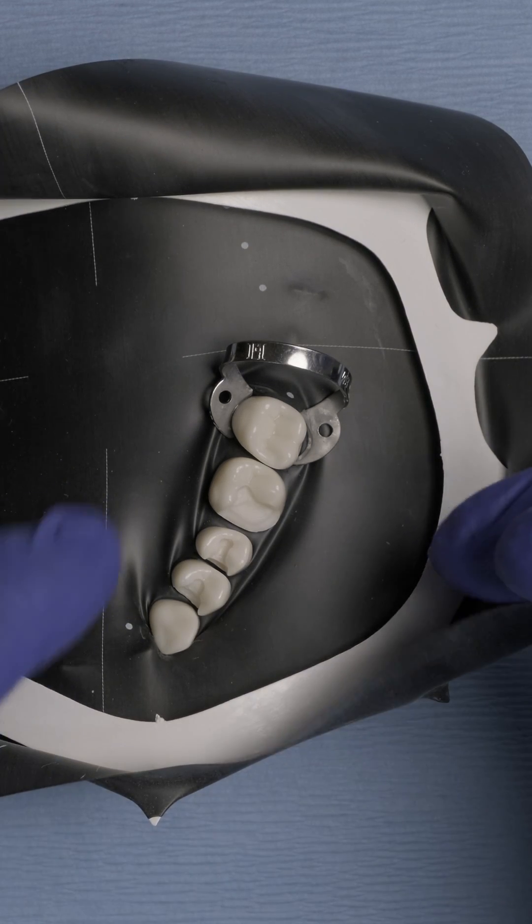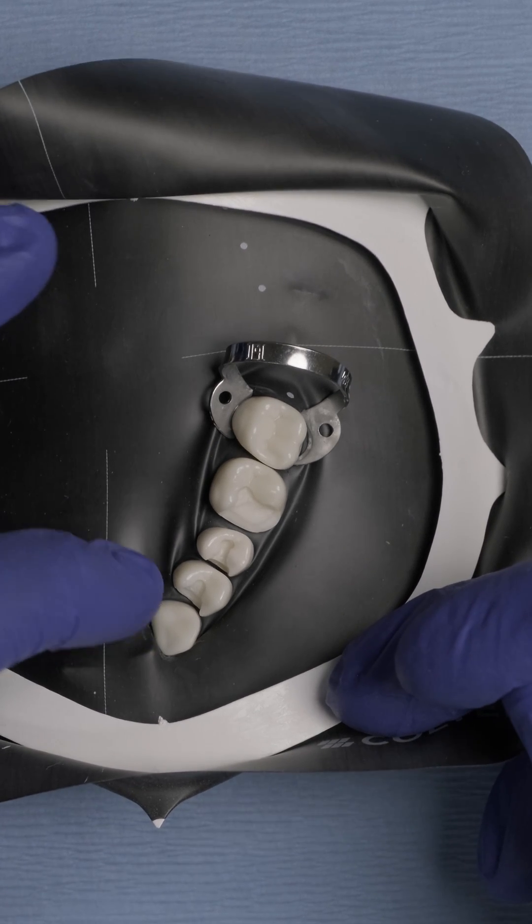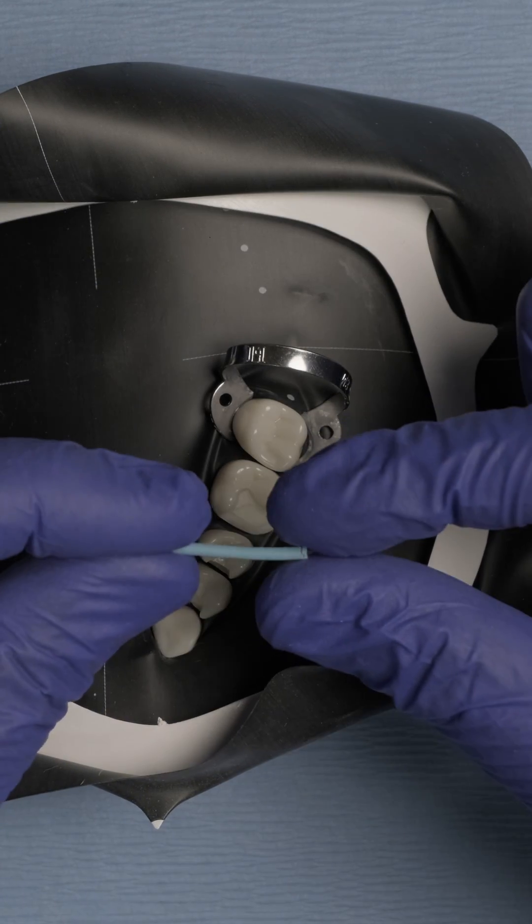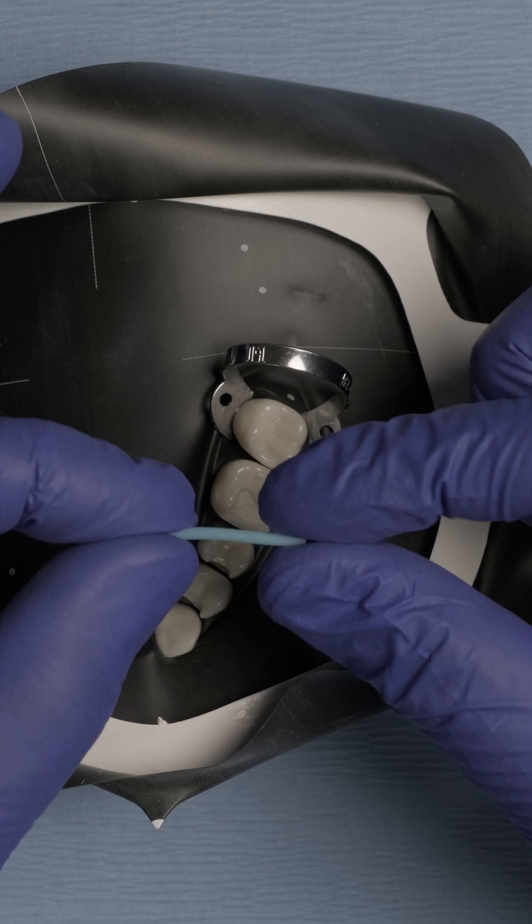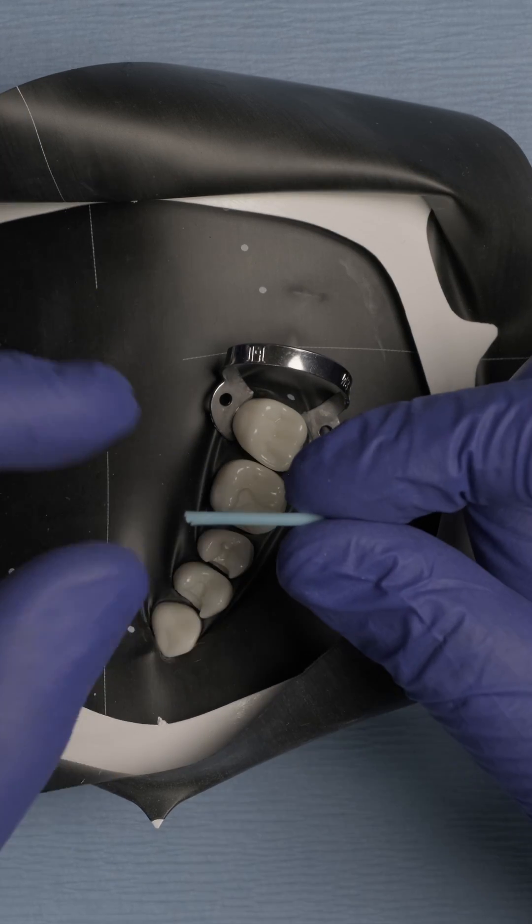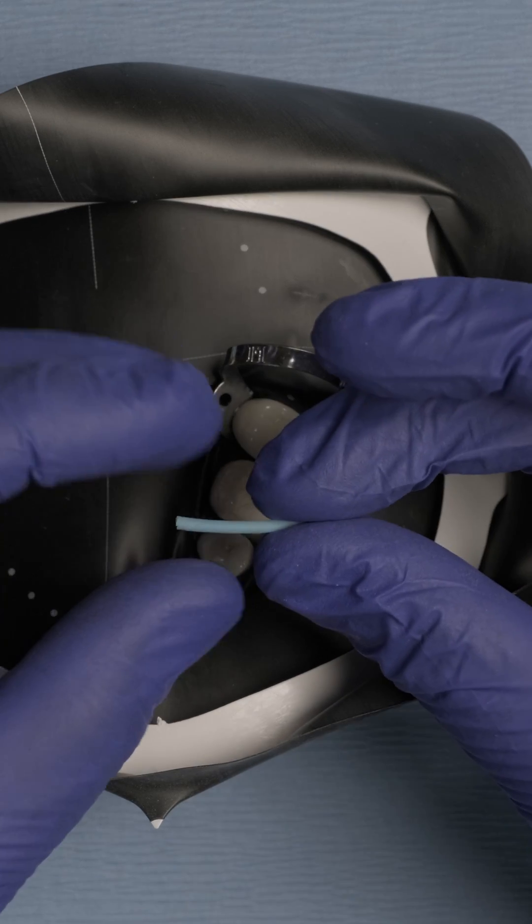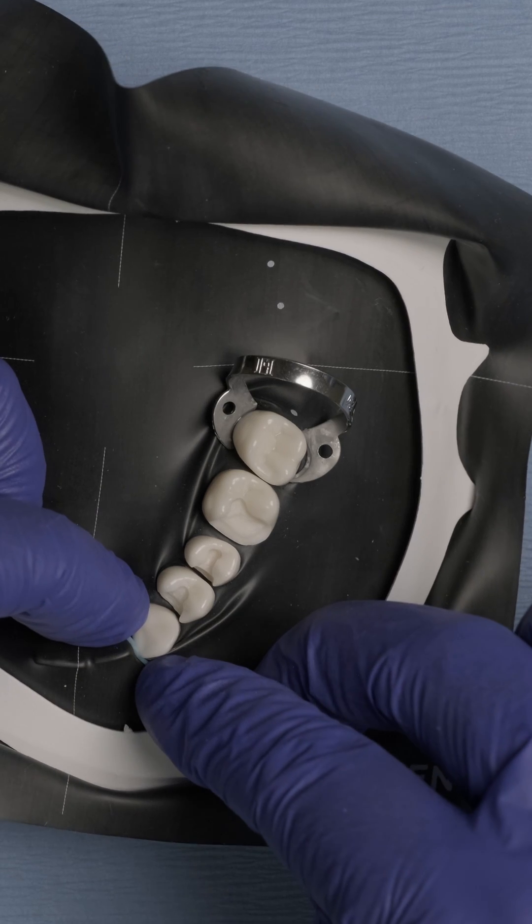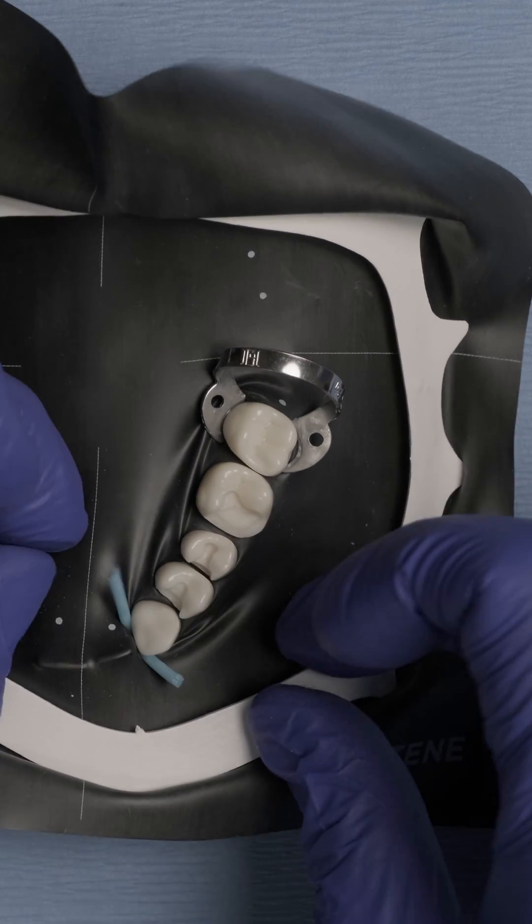At this point, all we need is to secure our rubber dam on the mesial aspect. The best way to do that is by using these wedgets. I cut them approximately ten millimeters long. I have them pre-cut in my office. All you have to do is just stretch the wedget and floss through the contact area and let go.